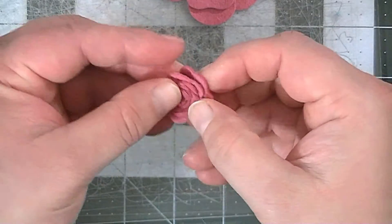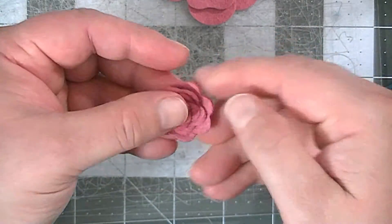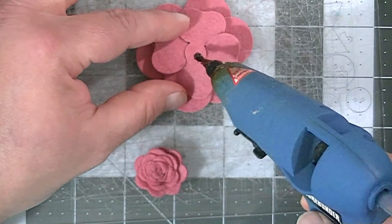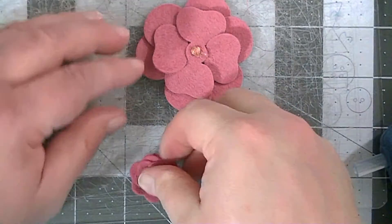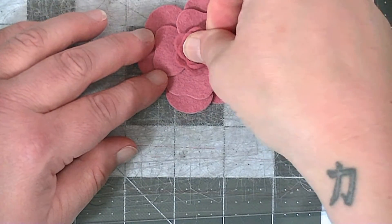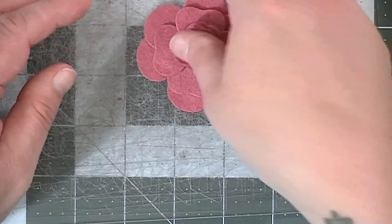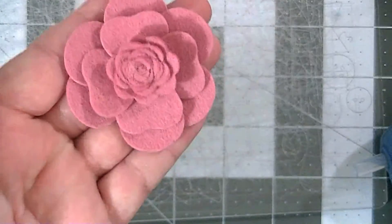Put some glue on the top of the other piece and stick that one on there. And voila, you have your flower.